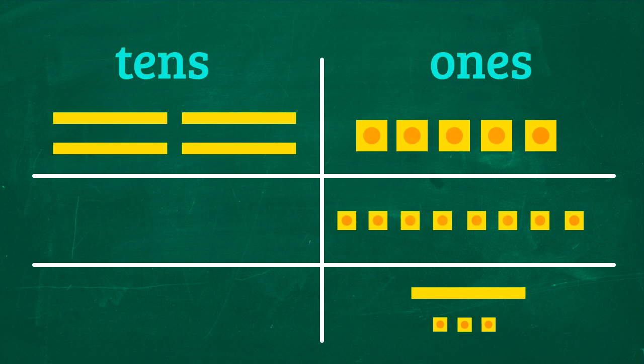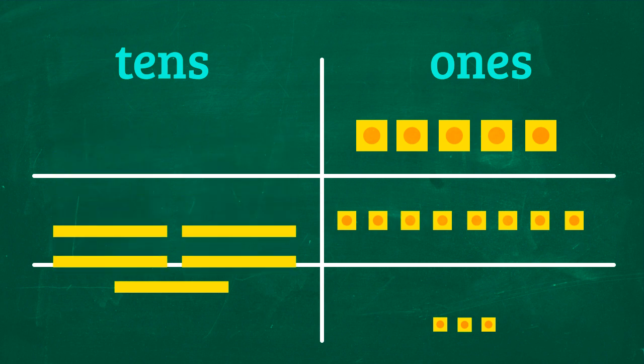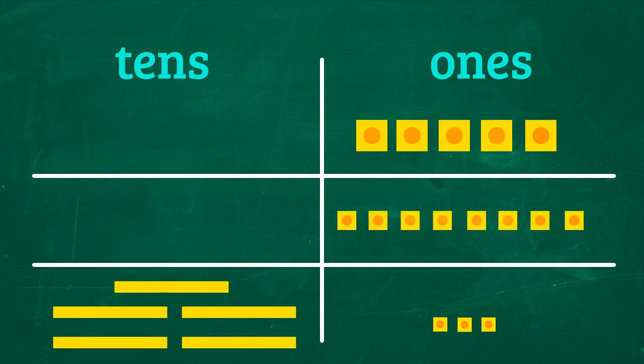After doing that, we can transfer the one 10 to the other column. Now we can proceed by adding the tens. 4 tenths plus 1 ten is 5 tenths. We now have 5 tenths and 3 ones, or 53. 45 plus 8 is equal to 53.